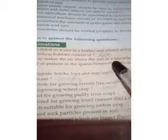Question 2. Which component of soil makes the air above the soil in a farmland shimmer on a hot summer day? Water.